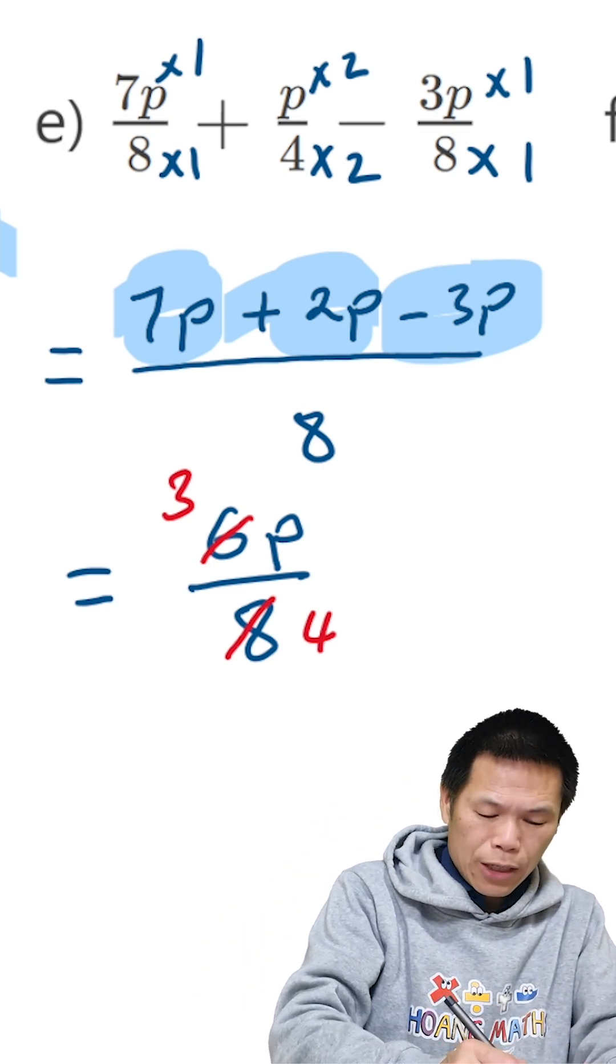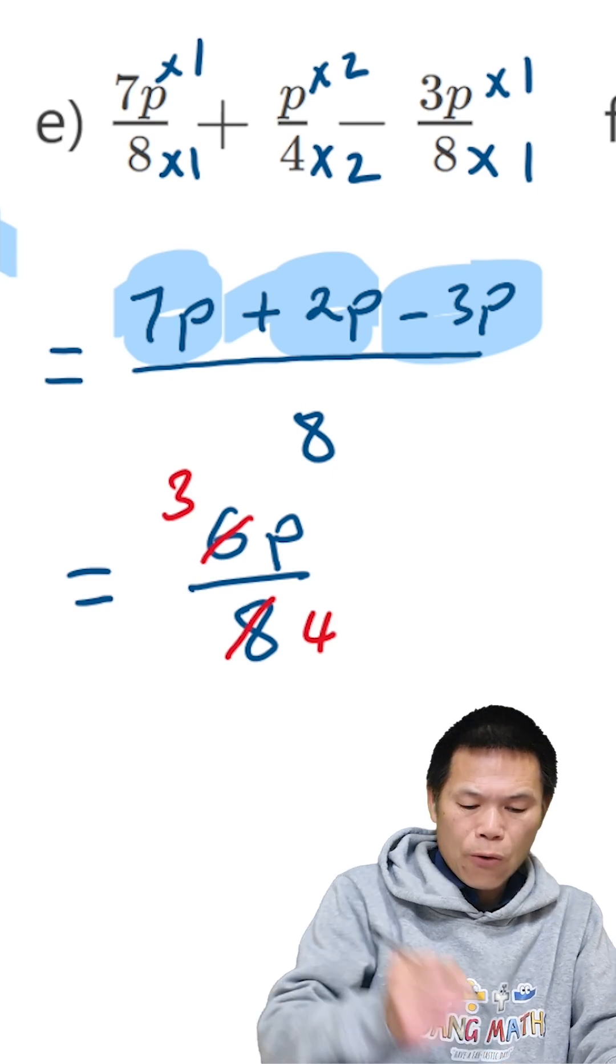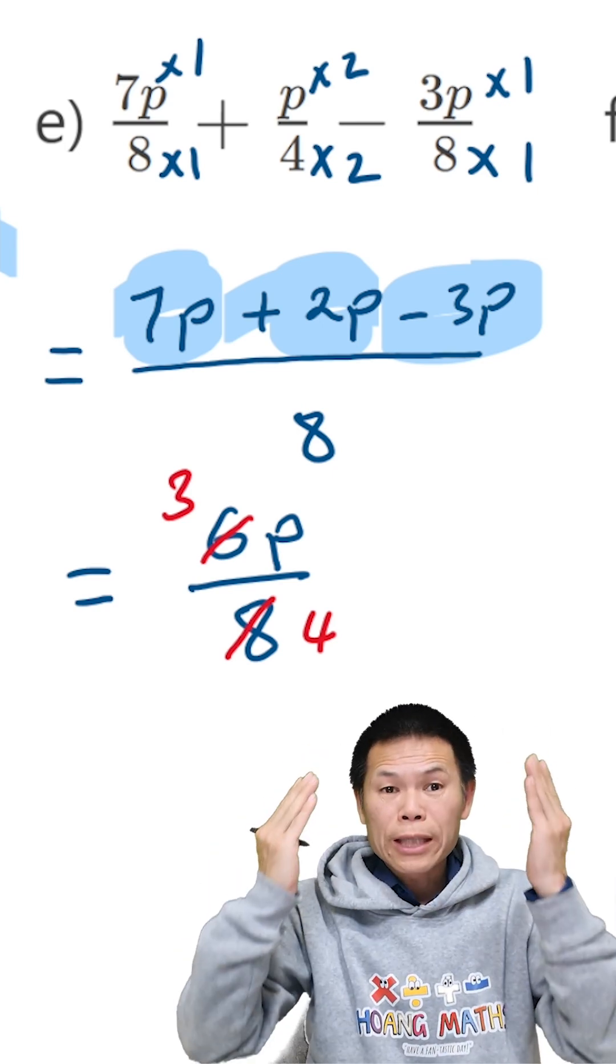So that is equal to 3P over 4. So there you go.